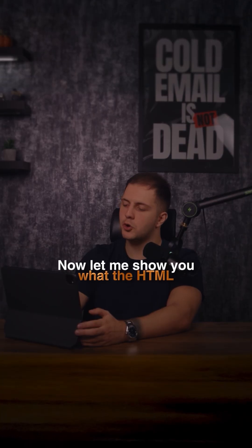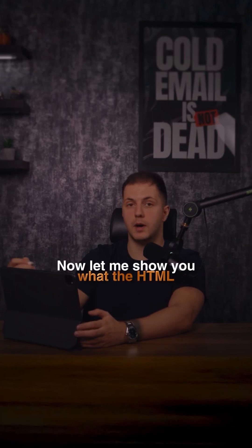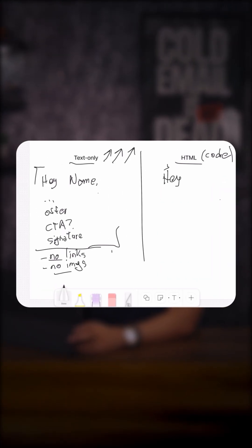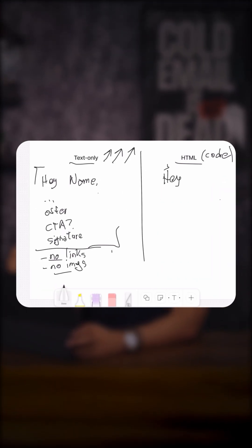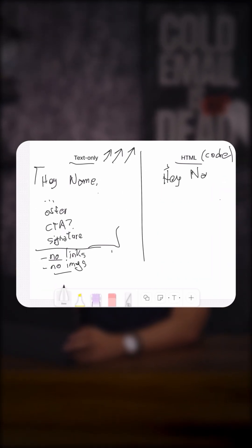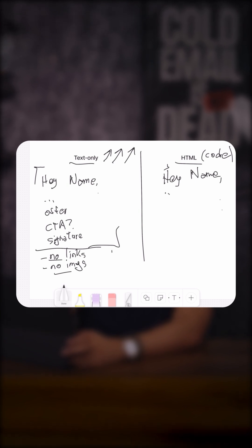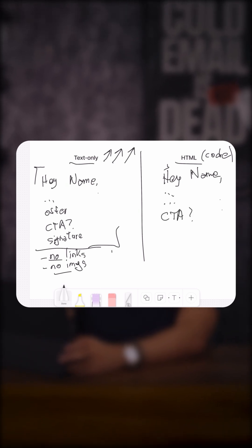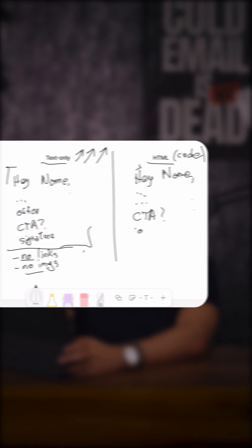Now let me show you what the HTML email actually looks like. The first part, or the actual body of the email, would be the same — something like: Hey [name], intro sentence, then offer, then a call to action, then the signature.